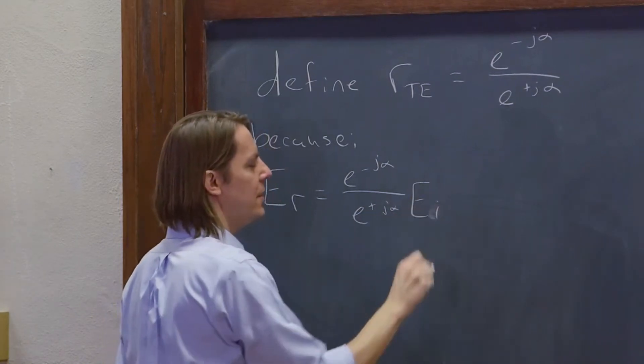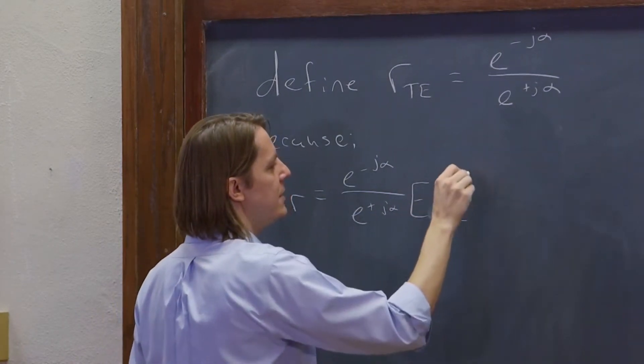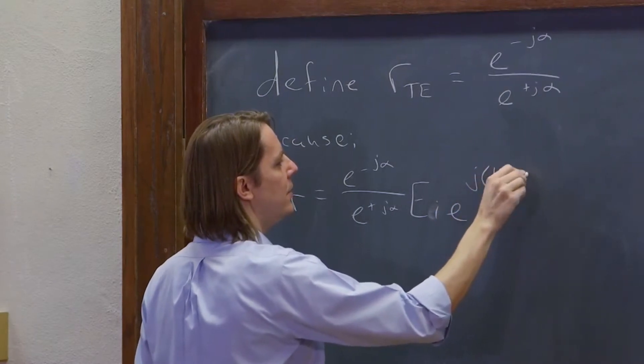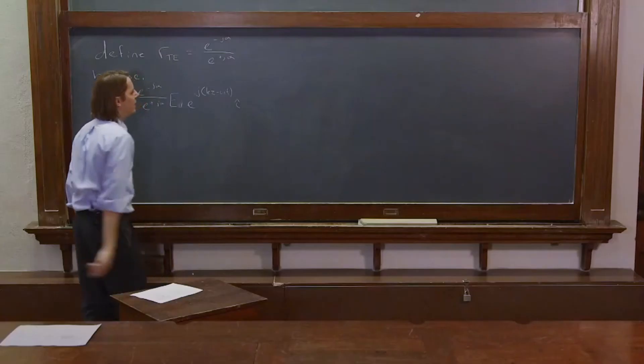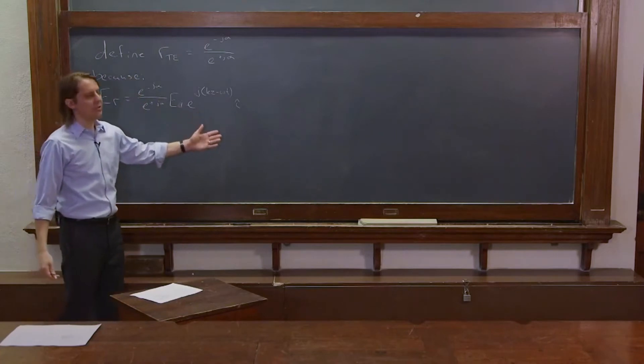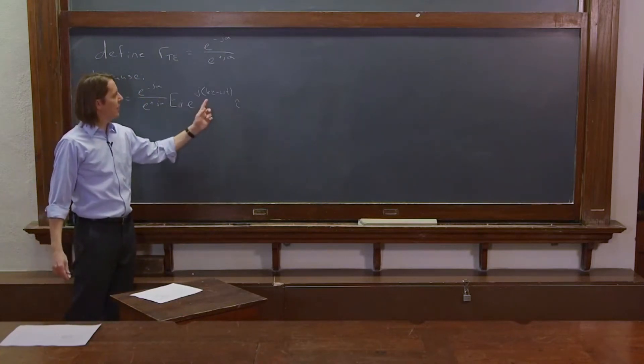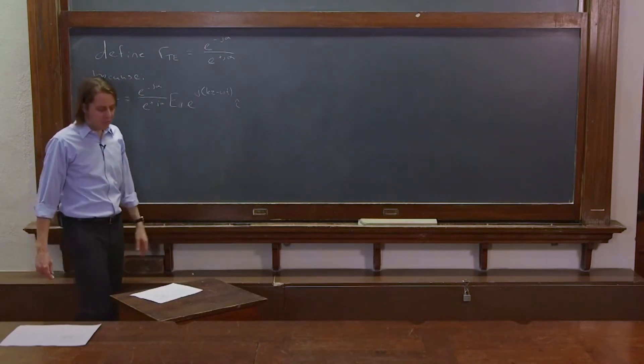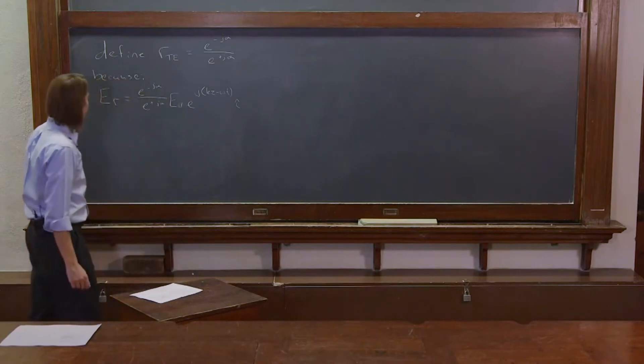So ER is E incident, which is e to the j kz minus omega t i hat, if we imagine a plane wave polarized along x and moving in z. The directions won't matter. We can call it whatever we want.